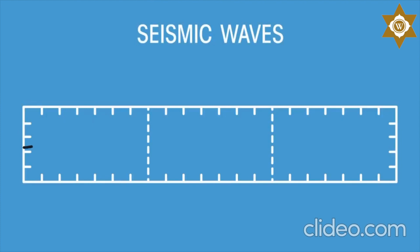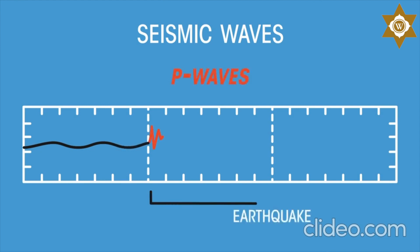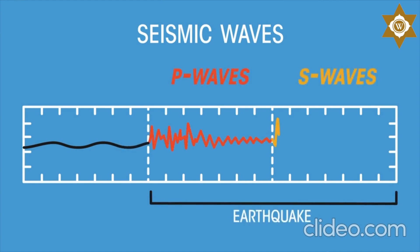Earthquakes are daily natural events monitored by seismic detector stations across the globe, which all build up a picture of how the waves travel through the earth. This is one way of displaying the seismic waves as detected by a seismometer. Notice how the P wave arrives first, and here comes the S wave.